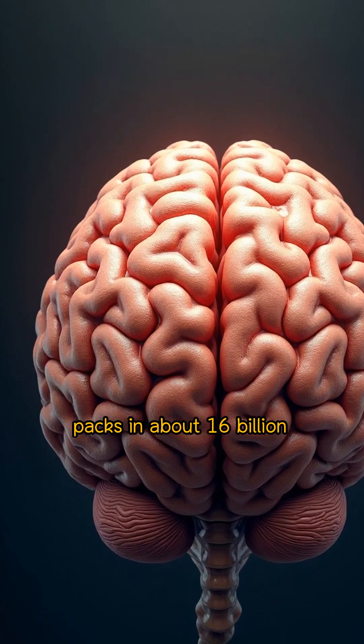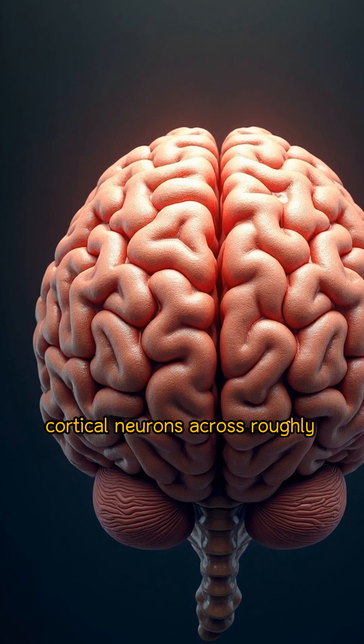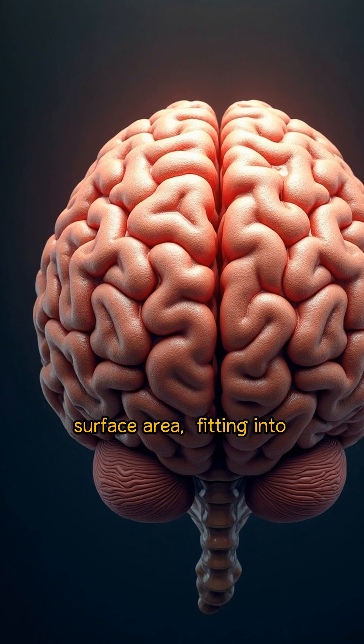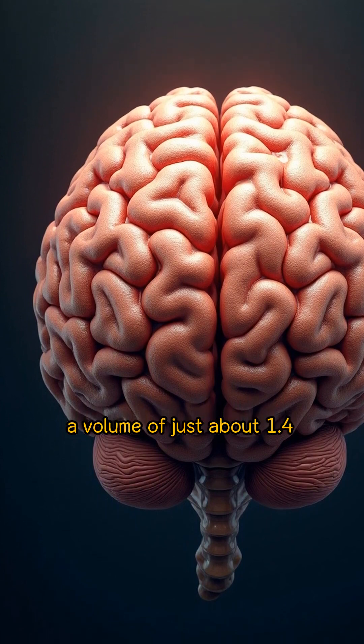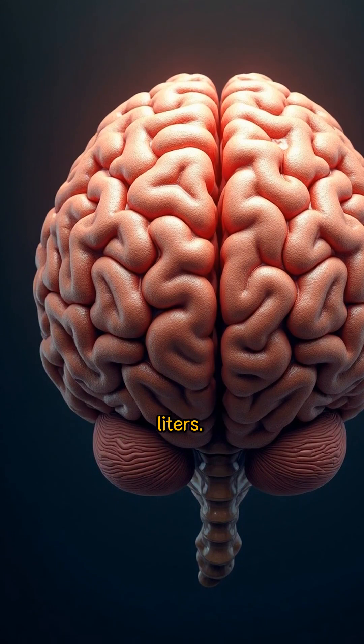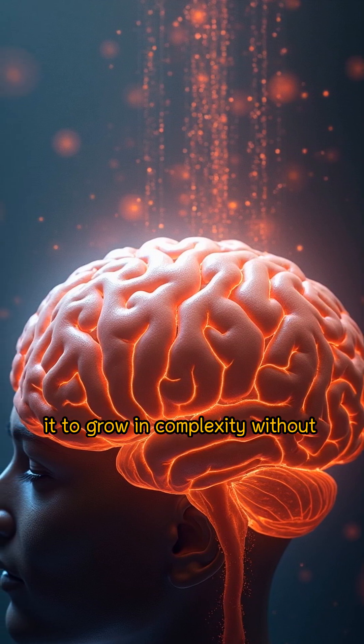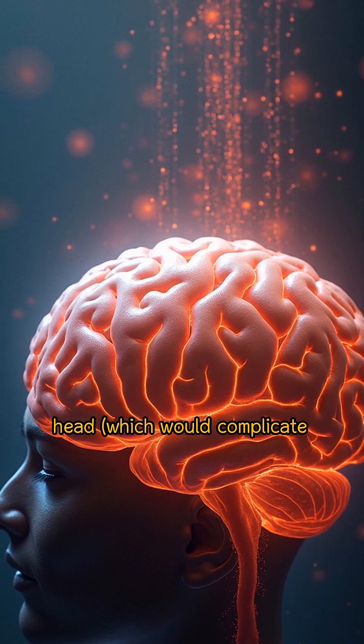By folding, the human brain packs in about 16 billion cortical neurons across roughly 2,500 square centimeters of surface area, fitting into a volume of just about 1.4 liters. Folding optimized the brain's surface-to-volume ratio, allowing it to grow in complexity without proportionally enlarging the head, which would complicate birth and mobility.